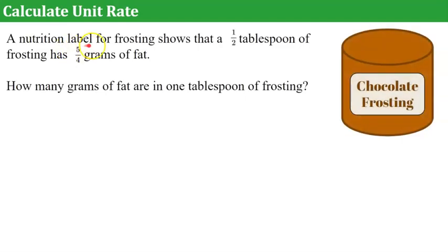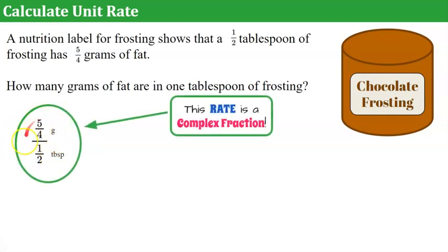Now we're going to calculate unit rate. We're given the nutritional label for frosting shows that a half a tablespoon of frosting has 5/4 grams of fat. So we're asked to find out how many grams of fat are in one tablespoon of frosting. So if we have 5/4 of a gram in a half a tablespoon, we want to know how many grams per tablespoon.